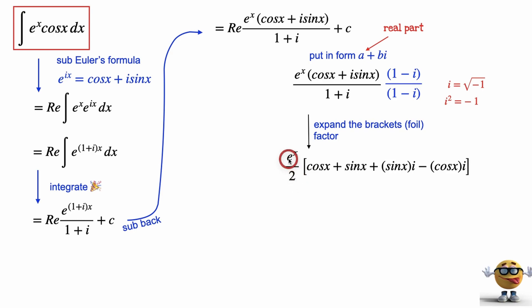what we get is e to the x divided by 2 times cos x plus sin x, which is our real part, plus this is the imaginary part, sin x i minus cos x i. What we care about is the real part, this A right here.